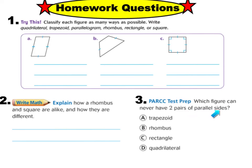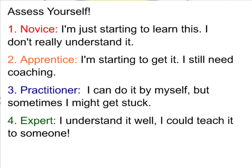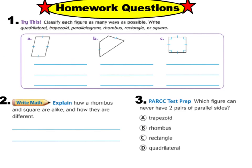After answering the three questions, assess yourself by listing a one, two, three, or four depending on how you feel about your understanding of quadrilaterals. If you feel like a novice or apprentice, you're welcome to re-watch this video. If you're a practitioner and can do it with occasional notes, put down three. If you're an expert and know every type of quadrilateral, put down four. Bring your notes and homework back to class tomorrow and we will go over them together. Have a good night!